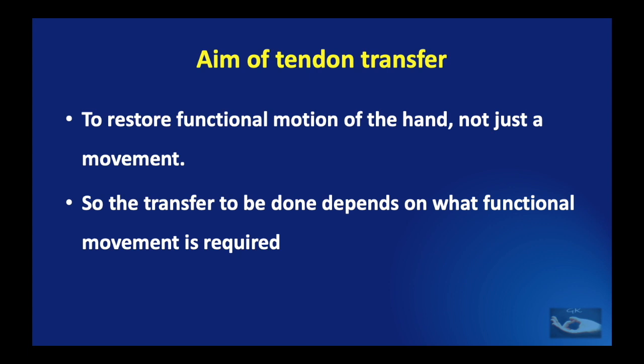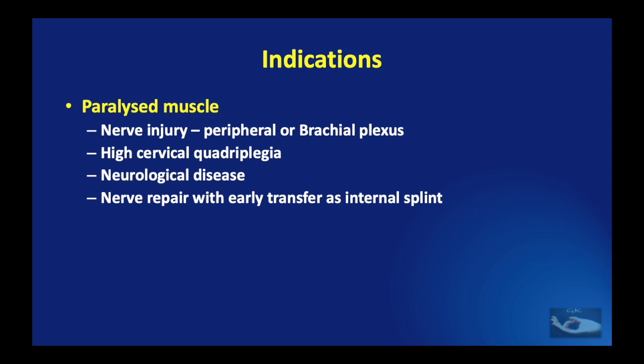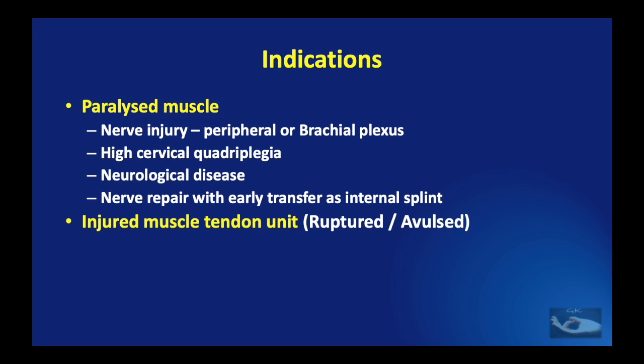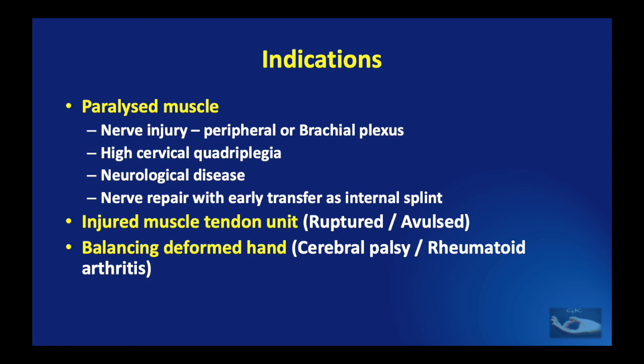The indications for tendon transfers are to replace paralyzed muscle, which could be due to a nerve injury — either a peripheral nerve injury or a brachial plexus injury — high cervical quadriplegia, neurological diseases, or nerve repair with early transfer as an internal splint; or to replace an injured muscle-tendon unit which could have been either ruptured or avulsed; or to achieve balance in a deformed hand, which could be as a result of cerebral palsy, a degenerative disease like rheumatoid arthritis, or even congenital anomalies like hypoplastic thumb.